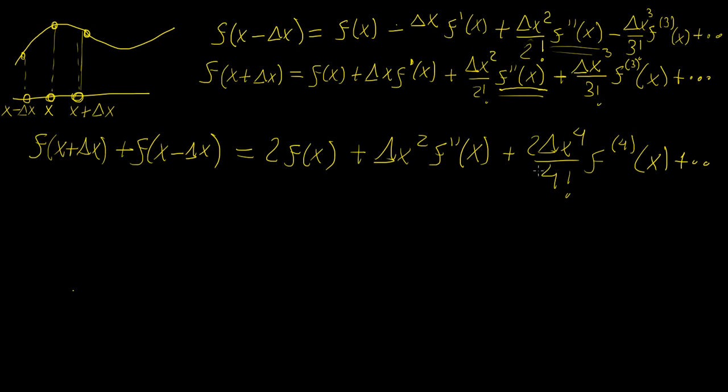All right, so the next thing we're going to do is, well, now we want to solve for f double prime. So how can we do that? Well, first of all, let's move this to the other side. So we're going to have f of x plus delta x, and because it is a point in between those two, I'm just going to put it in the middle here.